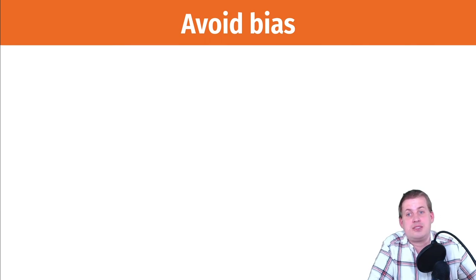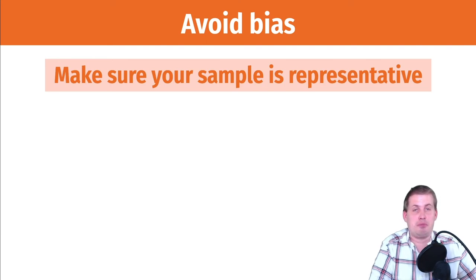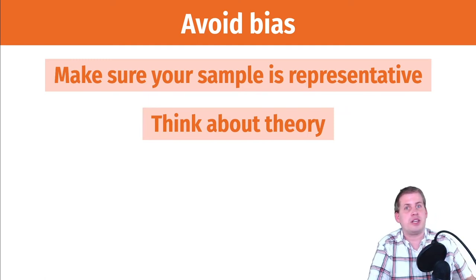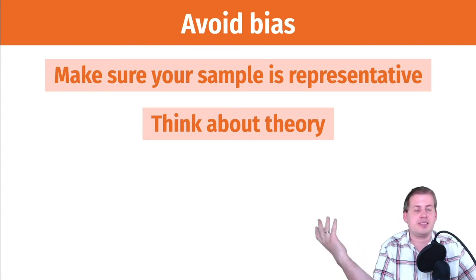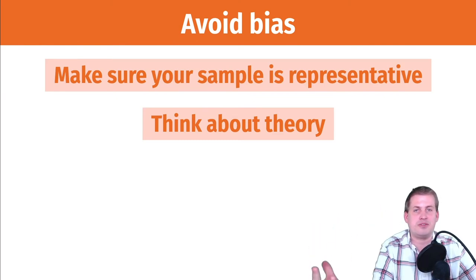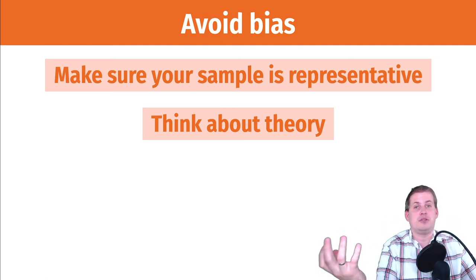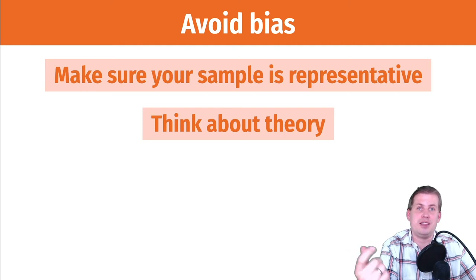To avoid these issues, you need to make sure your sample is representative. Just because you have numbers in a spreadsheet doesn't mean it represents society or that it's unbiased. You also need to think about theory — one core problem with automated bias is that most of these algorithms don't have a theoretical foundation. They just collect as many columns as possible, throw them into a regression model, and see which ones are predictive.